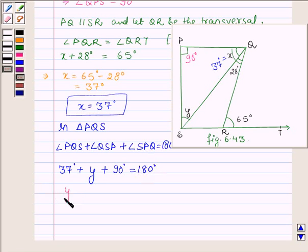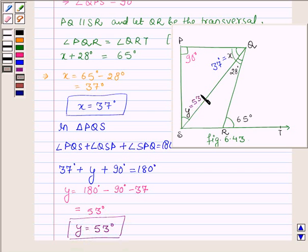y is equal to 180 degrees minus 90 degrees minus 37 degrees which is further equal to 53 degrees. Thus y is equal to 53 degrees. So this is 53 degrees.